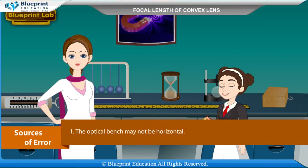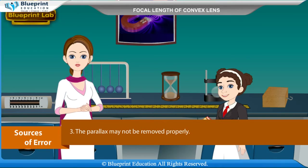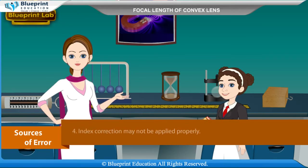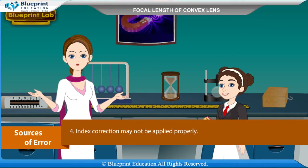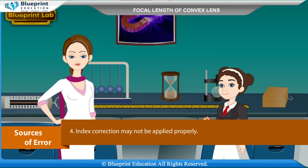Sources of error: The optical bench may not be horizontal. The uprights may not be vertical. The parallax may not be removed properly. Index correction may not be applied properly. Thank you, ma'am, for this knowledgeable experiment.